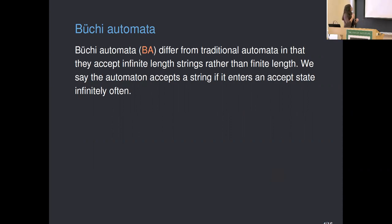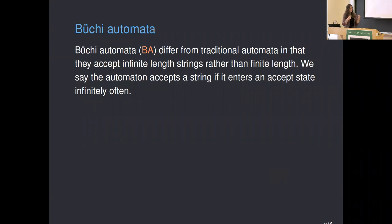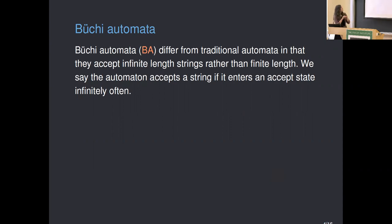Büchi automata differ from traditional automata in that they accept countably infinite-length strings indexed by ω rather than finite-length strings. All we change when passing to Büchi automata is the acceptance condition. With finite automata, a string is accepted if it terminates its run in an accept state, but with infinite-length strings we can't talk about termination. So we adjust the acceptance condition: the automaton accepts an infinite string indexed by ω if it enters an accept state infinitely often.